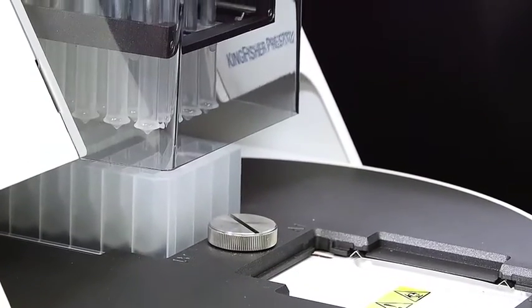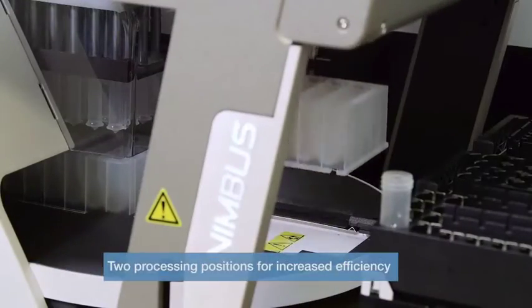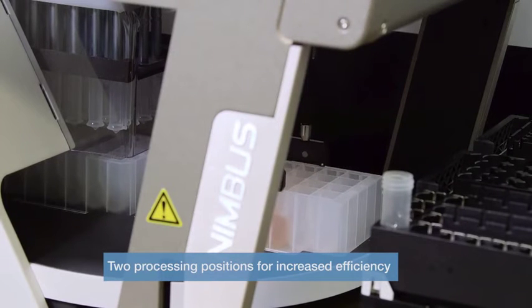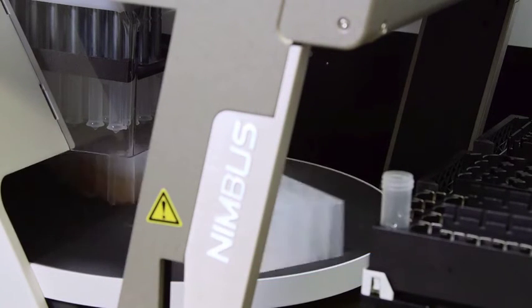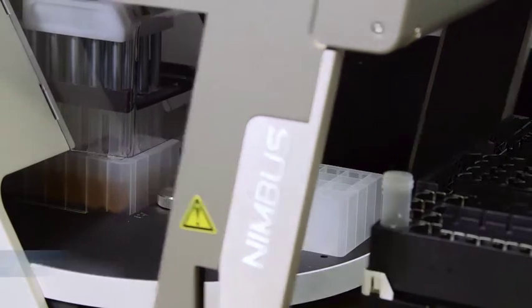The gripper arms transfer one plate to the loading position. The instrument then rotates the plate to the processing position under the magnetic head.